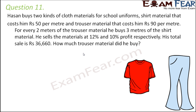Let us first understand the ratio. The sentence says: for every 2 meters of trouser material, he buys 3 meters of shirt material. So if he buys 9 meters of shirt, he would have bought 6 meters of trouser. The ratio of trouser to shirt will always remain 2 is to 3.